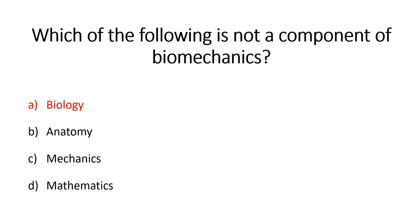The first question asked which of the following was not a component of biomechanics. Biology, anatomy, mechanics, mathematics? The answer was A, biology. Biology is a composite of anatomy and physiology. Human biology would be the study of human anatomy and human physiology. Physiology is a whole other branch of study that we don't deal with in biomechanics. Biomechanics is a patchwork quilt comprised of anatomy, mechanics, and mathematics. So the correct answer was A, biology.